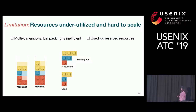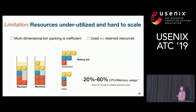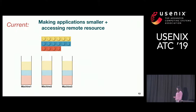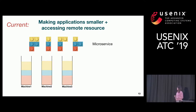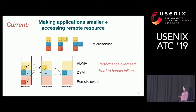A related problem is that, because you cannot easily move a job around after it starts to run, you have to pre-reserve more resource than what is actually used. Because of this, we are seeing in major data centers like Google and Alibaba that CPU and memory utilization is only 20% to 60%. Current solutions include splitting applications into fine-grained smaller pieces with microservices, running them separately on different machines and communicating through RDMA, remote swap, and distributed shared memory — but there's still a performance overhead and no good support for fine-grained failure.